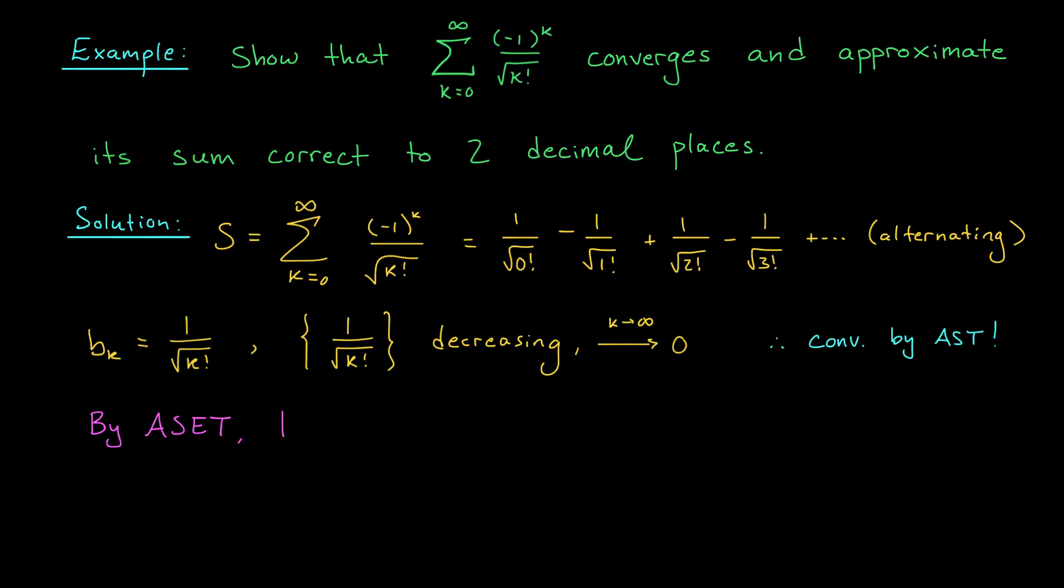According to the estimation theorem, the magnitude of the error in approximating s using the nth partial sum sn is at most bn plus 1, which for us is 1 over the square root of n plus 1 factorial. We need this error term to be less than 10 to the minus 2. Now if this expression had no factorial in it, we might be able to move things around and actually solve for n, but it turns out that solving equations or inequalities involving factorials can actually be pretty tough. So I think our best option is to just plug in some small values for n until this inequality is satisfied.